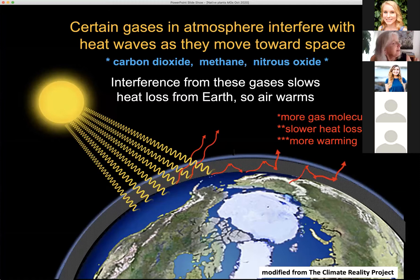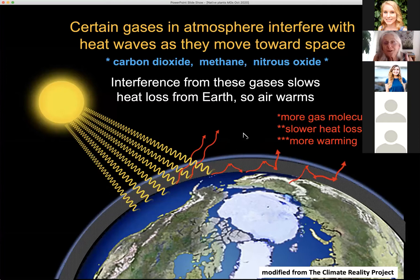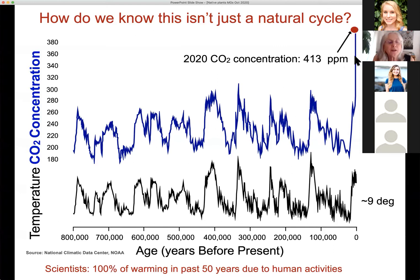If you've been paying attention to arguments about climate change, you'll notice that you never hear anyone say the greenhouse effect doesn't work — because it's the laws of chemistry and physics, it's going to work. People ask me how we know this is not just a natural cycle of increased temperature or carbon dioxide. This is a somewhat complicated graph that starts at the present and goes backwards 800,000 years — about eight times as long as humans have been on the planet, so a really long time.